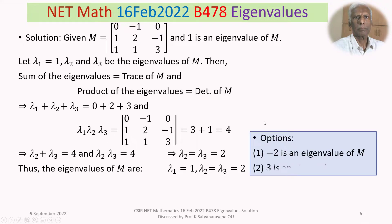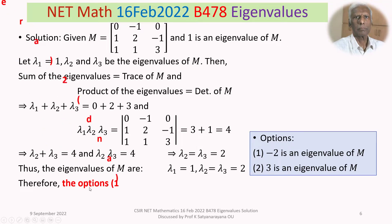Looking at the options: Option 1 says -2 is an eigenvalue of M, and Option 2 says 3 is an eigenvalue of M. Both are not true. Therefore options 1 and 2 are not true.